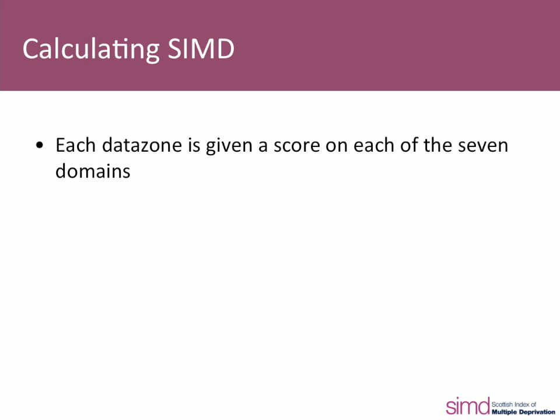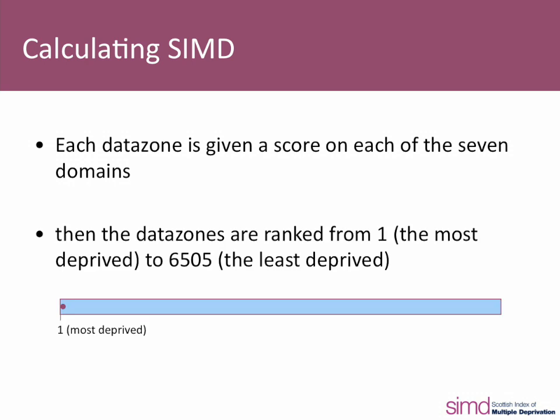The resulting scores for the overall SIMD are then ranked from one, being the most deprived, to 6,505, being the least deprived. The smaller the rank, the more deprived the data zone.